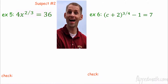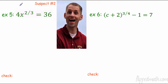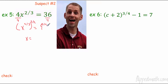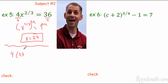Let's look at suspect number 2 — Mr. Bean. He has some exponential functions here. Divide each side by 4 to get x to the two-thirds equals 9. The opposite of raising to the two-thirds is raising to the three-halves, because those exponents cancel to 1. So I raise to the three-halves: take the square root of 9, which is 3, then 3 to the 3rd, which is 27. Checking: 4 times 27 to the two-thirds — cube root of 27 is 3, 3 squared is 9, and 4 times 9 equals 36. It checks out.